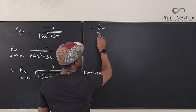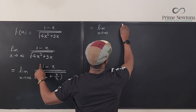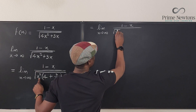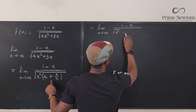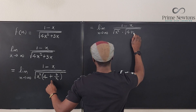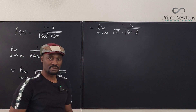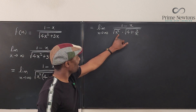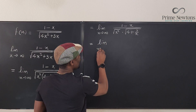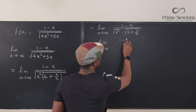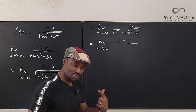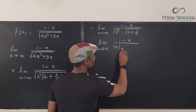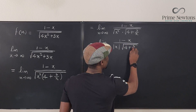We can now write this as the limit as x goes to infinity of (1 - x) over the product of two square roots: √(x²) times √(4 + 3/x). And we know that √(x²) is the absolute value of x, so the denominator becomes |x| times √(4 + 3/x).